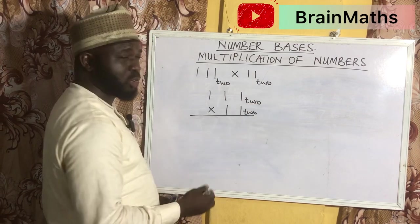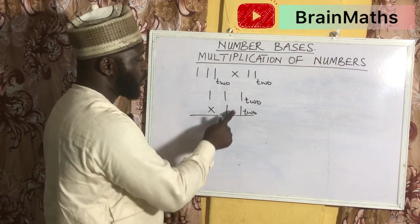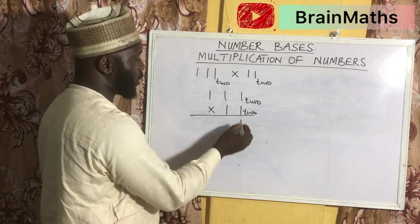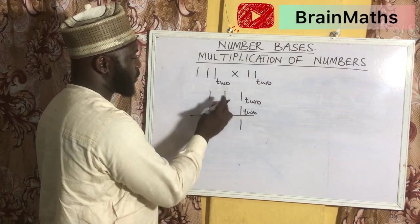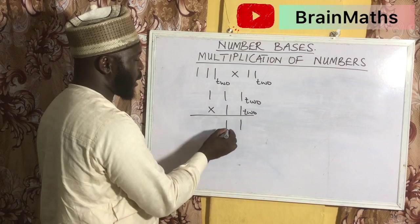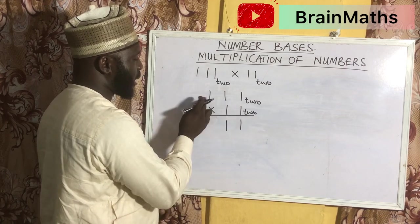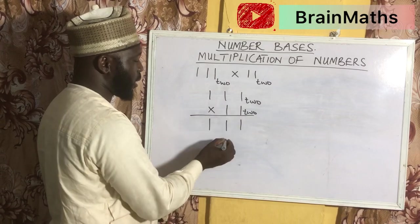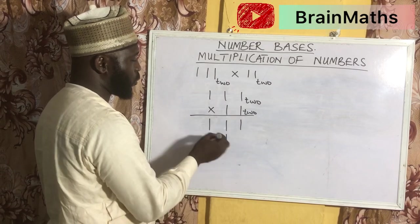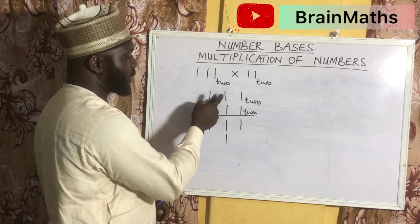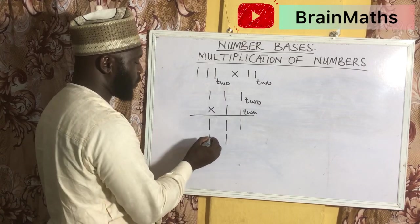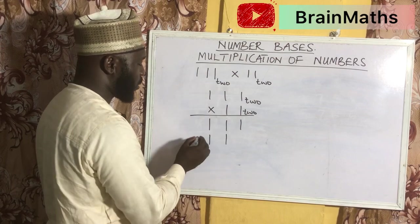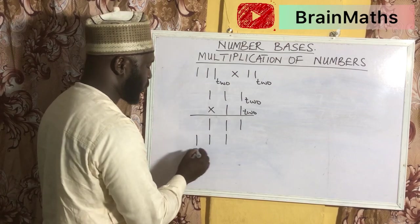So let's multiply out. 1 times 1 is 1. 1 times 1 is 1. 1 times 1 is 1. Then 1 times 1 is 1, 1 times 1 is 1, and 1 times 1 is 1.